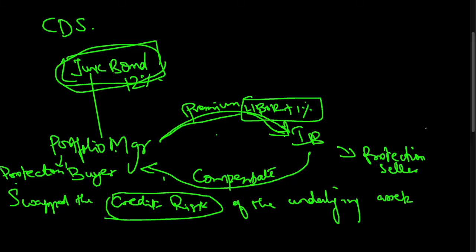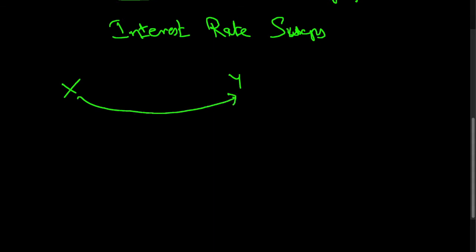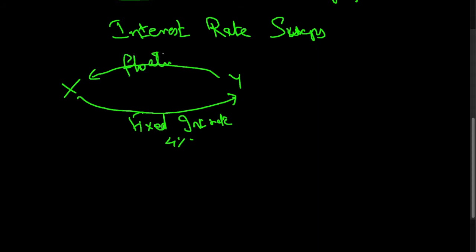Next is interest rate swaps. In an interest rate swap, there are again two parties X and Y. One leg of the cash flow is an interest rate and so is the second leg. One leg can be a fixed interest rate — say 4% — and the other leg can be a floating interest rate, which keeps changing and is indexed to a reference rate such as LIBOR.